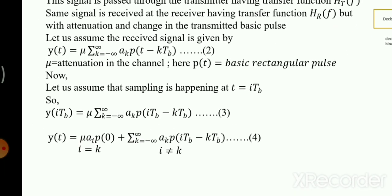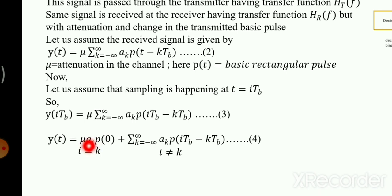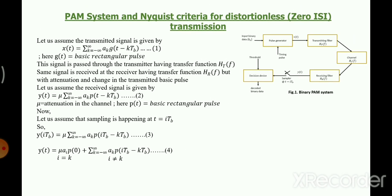The first part of the sampled equation (i = k term: a_i · p(0)) is desirable — it represents the transmitted symbol. The second part (i ≠ k terms: Σ a_k · p(iT_b − kT_b)) is the ISI component, responsible for distortion by interfering with neighboring pulses. We need to get rid of this second part.